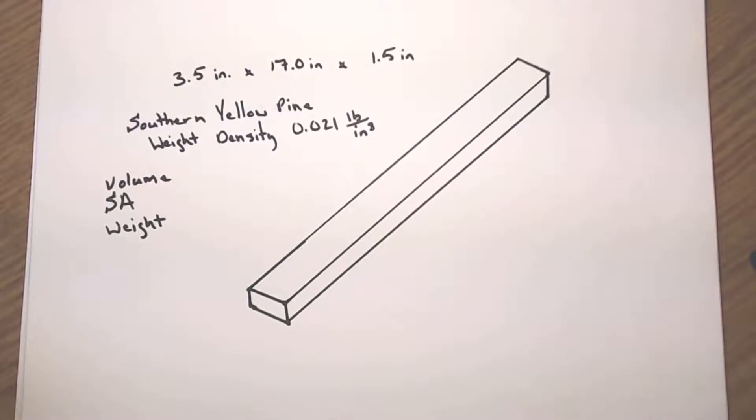Hey folks, Mr. Hartzler here again. I want to show you how to define the volume, surface area, and weight of a rectangular prism. So in this case, it's going to be a rectangular board.